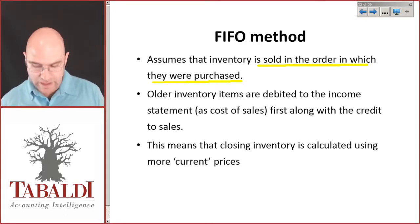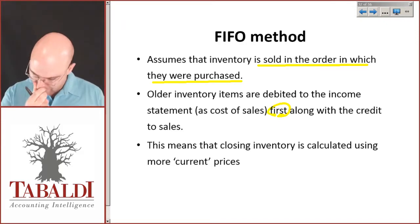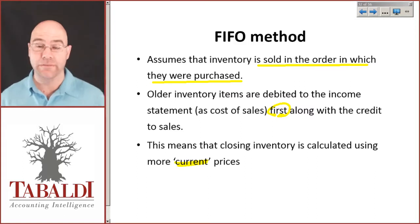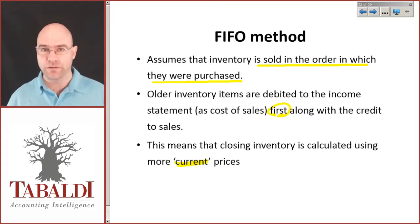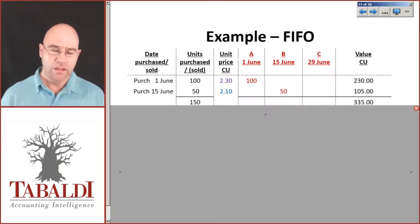All the inventory items are debited to the income statement as cost of sales first before you go to the new items. This means that our closing inventory balance is calculated using the more current prices and probably, well definitely, a much better reflection of the economic circumstances. It's quite a difficult one to maintain some records for though.